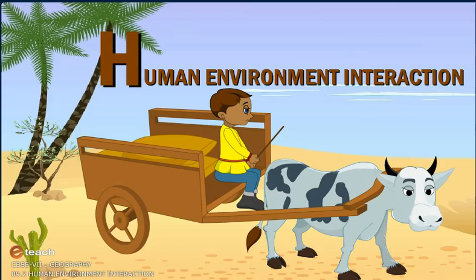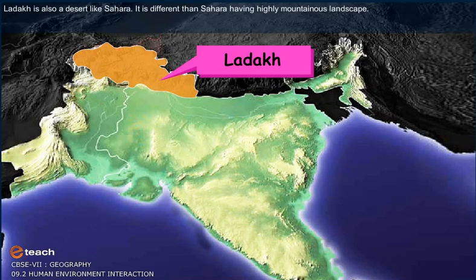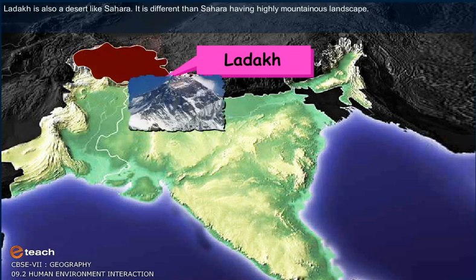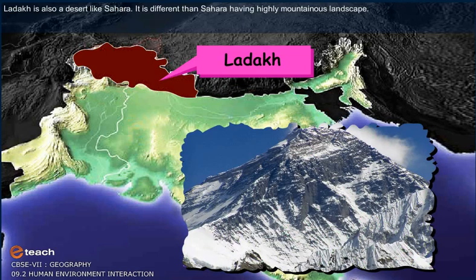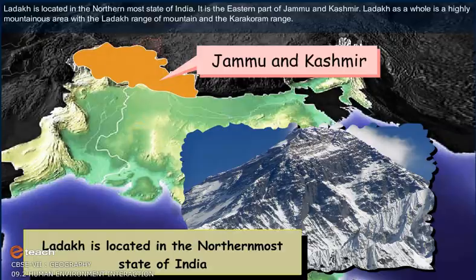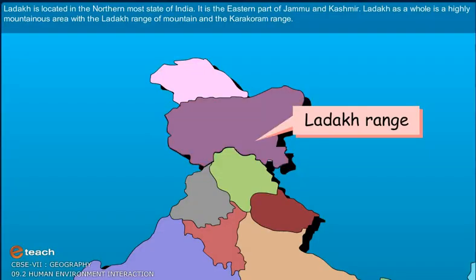Environment interaction: life in desert regions — Sahara and Ladakh. Let's learn about the location, climatic conditions, and people of Ladakh. Ladakh is also a desert, like the Sahara, but different from it, having a highly mountainous landscape. Ladakh is located in the northernmost state of India — it is the eastern part of Jammu and Kashmir.